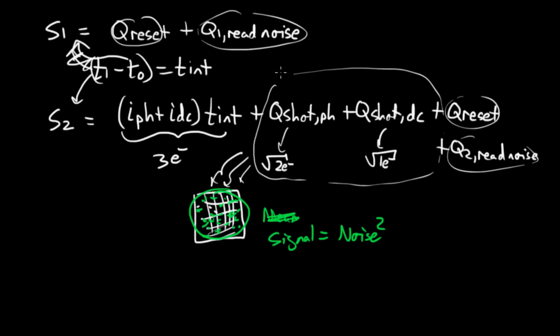And then plus Q2 read noise. This is completely uncorrelated from this guy. There are two separate things, resulting from thermal noise in your sampling circuitry. And they aren't going to subtract out when we do our operation.